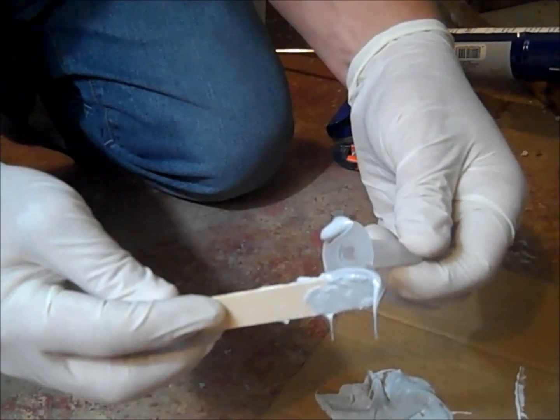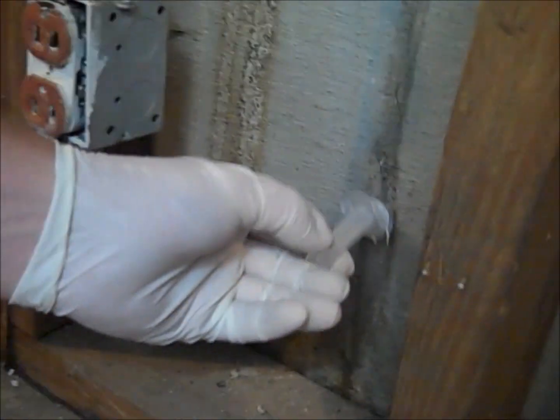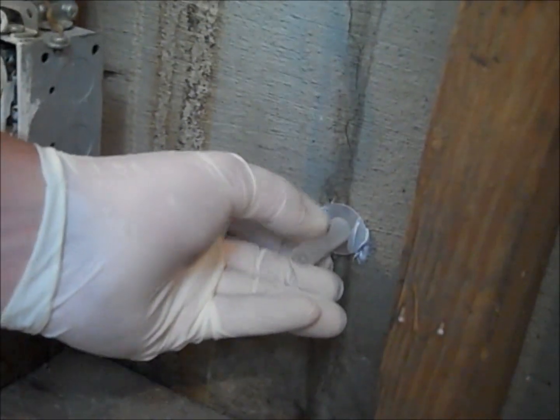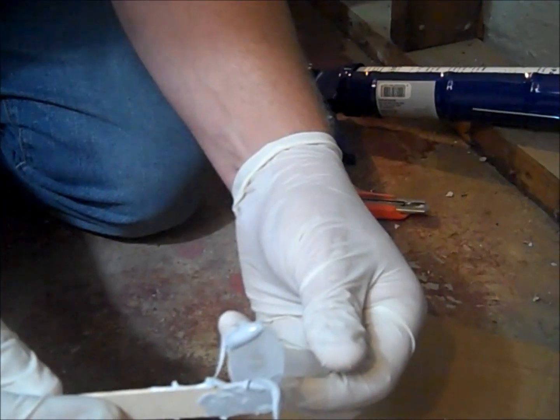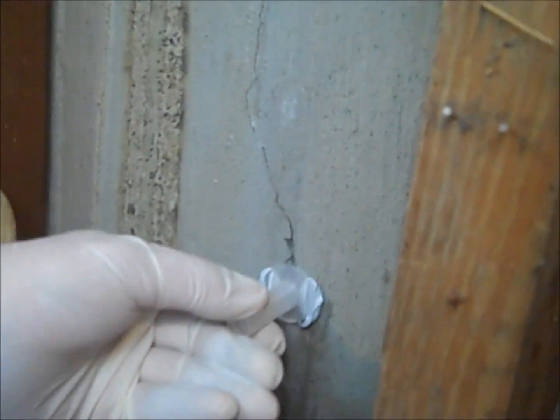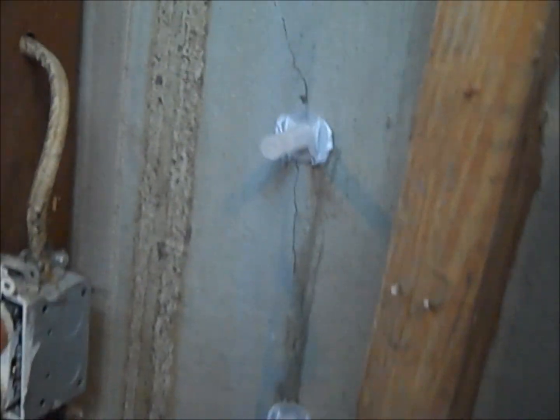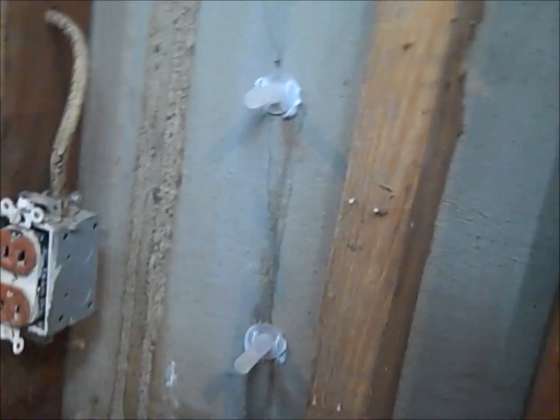Apply a thin bead of epoxy paste to the bottom of the injection or corner port. Place the injection port over the crack where you previously marked the wall. Check to make sure the injection port hole is open and not covered by epoxy paste. This will prevent the Hydrostop 300 from being injected into the crack. Allow the epoxy paste to cure for 10 to 15 minutes before the next step.